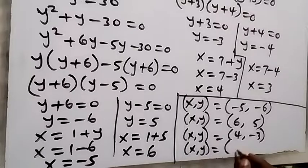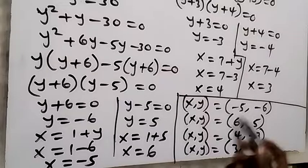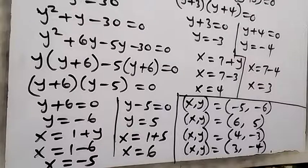We can now conclude all solutions. From Case 1: x comma y equals minus 5 comma minus 6, and x comma y equals 6 comma 5. From Case 2: x comma y equals 4 comma minus 3, and x comma y equals 3 comma minus 4. These are the solutions to this problem — you can substitute any of these into the equation to verify. Thank you for watching; don't forget to like, share, and subscribe to my channel. See you in the next class.